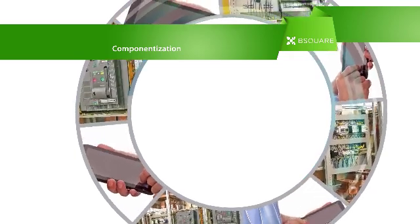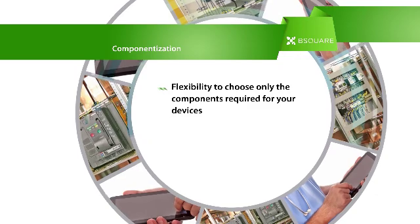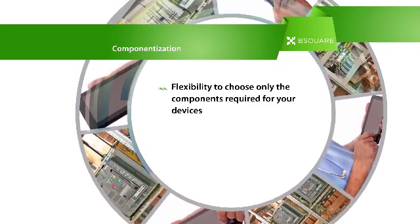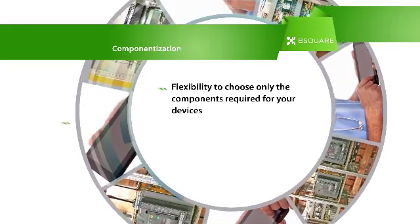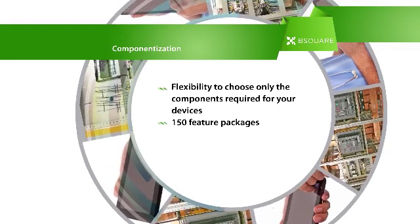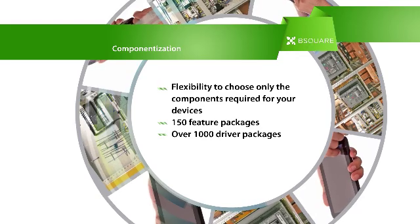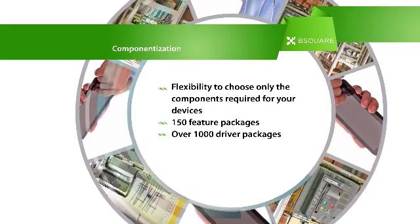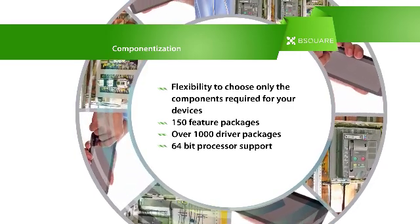Componentization – OEMs also have the flexibility to choose only those components that are required for their devices. This helps in managing the footprint as well as in reducing servicing costs. It includes over 150 feature packages, which are a collection of different components, as well as over 1,000 driver packages. Windows Embedded Standard is the first componentized Microsoft operating system that supports 64-bit processors for high-end embedded systems.